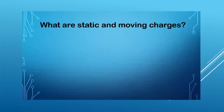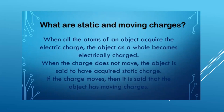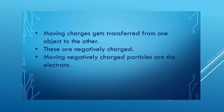What are static and moving charges? When all the atoms of an object acquire electric charge, the object as a whole becomes electrically charged. When the charge does not move, the object is said to have acquired static charge. If the charge moves, then the object has moving charge. In short, static charge means they do not move — they are steady or stationary, in one place. Moving charges get transferred from one object to the other.